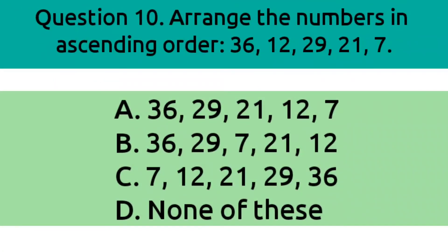Question 10. Arrange the number in ascending order. 36, 12, 29, 21, 7. Option A, 36, 29, 21, 12, 7. Option B, 36, 29, 7, 21, 12. Option C, 7, 12, 21, 29, 36. Option D, none of these. The correct answer is Option C, 7, 12, 21, 29, 36.